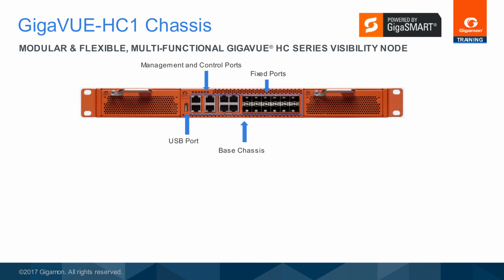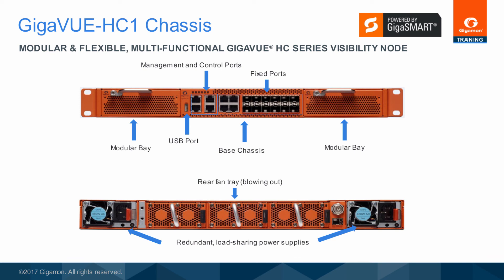The front of the Gigaview HC1 one-RU chassis shows the base chassis, the fixed management and control ports, as well as the USB port. The two modular bays are also shown. Note that the Gigaview HC1 supported modules are not interchangeable with the Gigaview HC2 supported modules. In back are the redundant, load-sharing, hot-swappable power supplies and a rear fan tray, as well as the ground connector and future time synchronization inputs.